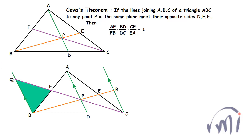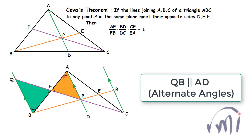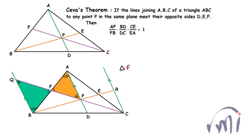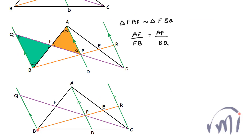If I take these two triangles, they are similar triangles where this angle is equal to this angle (vertically opposite angles), this angle equals this angle, and this angle equals this angle. So triangle FAP is similar to triangle FBQ, and the ratio AF to FP will be equal to AP to BQ.